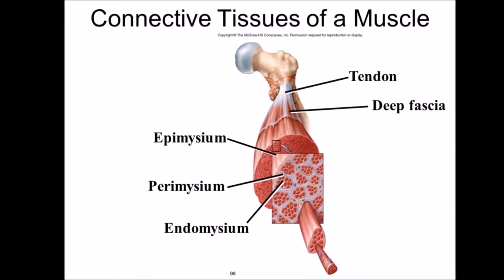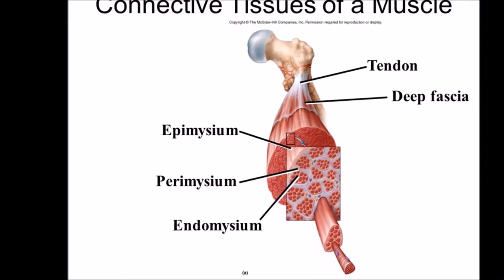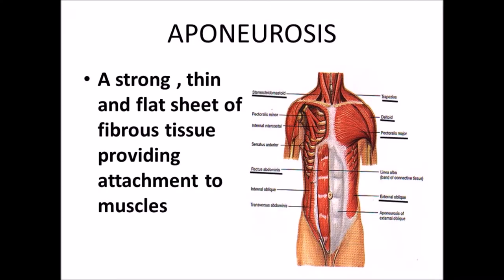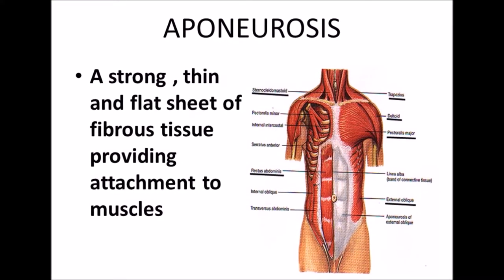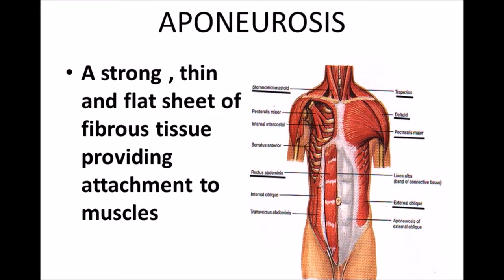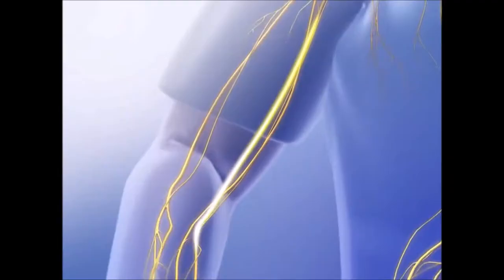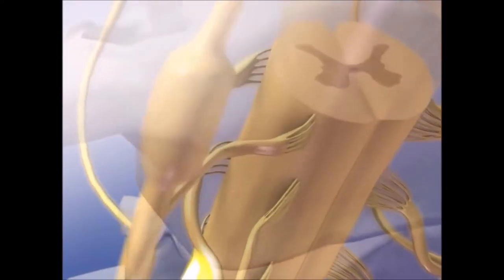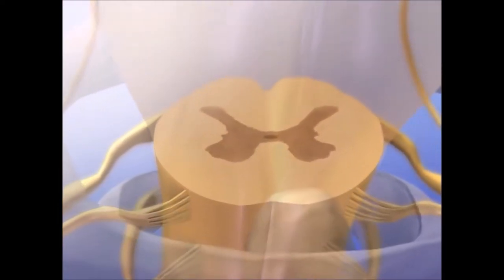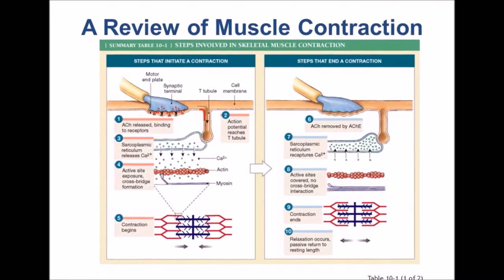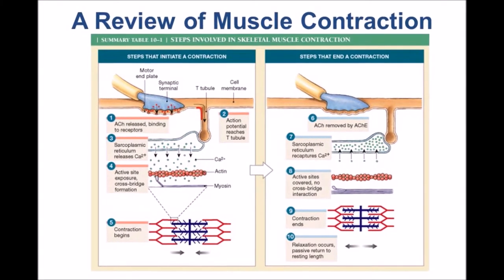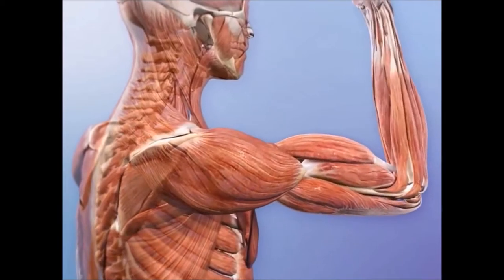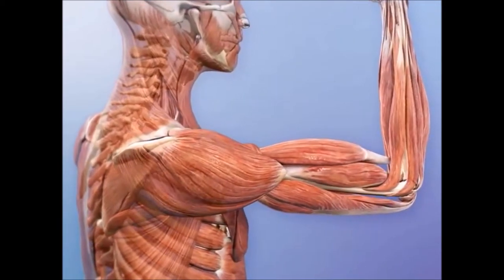Commonly, the epimysium, perimysium, and endomysium extend beyond the fleshy part of the muscle to form a thick rope-like tendon or a broad, flat, sheet-like aponeurosis. The tendon and aponeurosis form indirect attachments from muscles to bones or to the connective tissue of other muscles. Skeletal muscles have an abundant supply of blood vessels and nerves, directly related to their primary function of contraction. Before a skeletal muscle fiber can contract, it has to receive an impulse from a nerve cell. Generally, an artery and at least one vein accompany each nerve that penetrates the epimysium of a skeletal muscle.